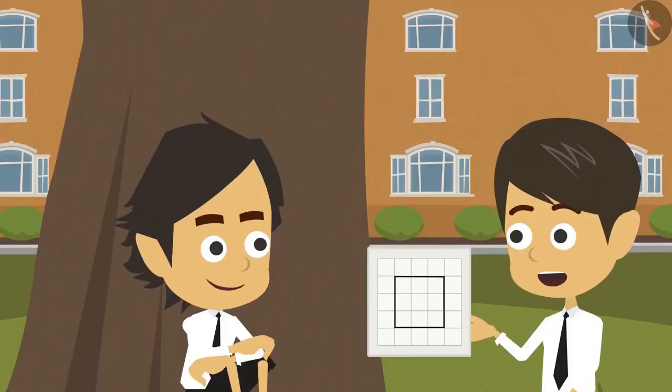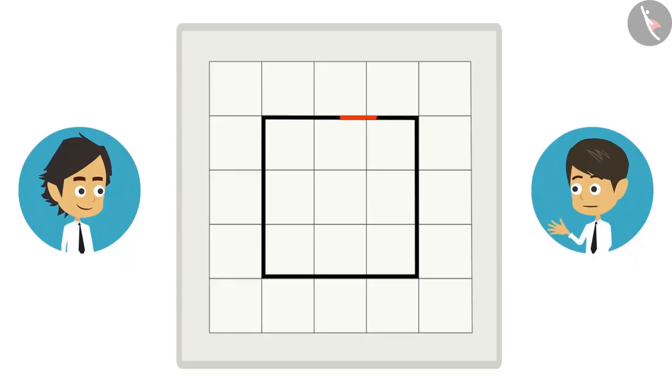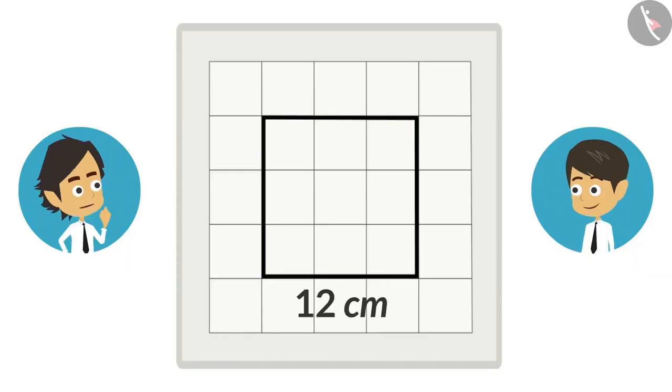Look, I made a square on this paper. Its boundary is 12 cm. Yes, that is easy to find.